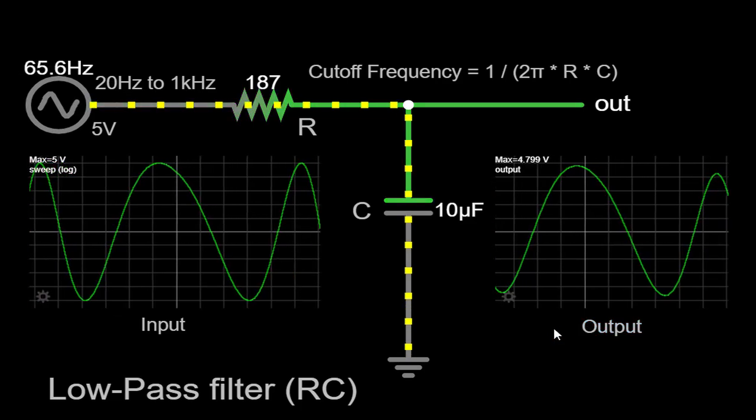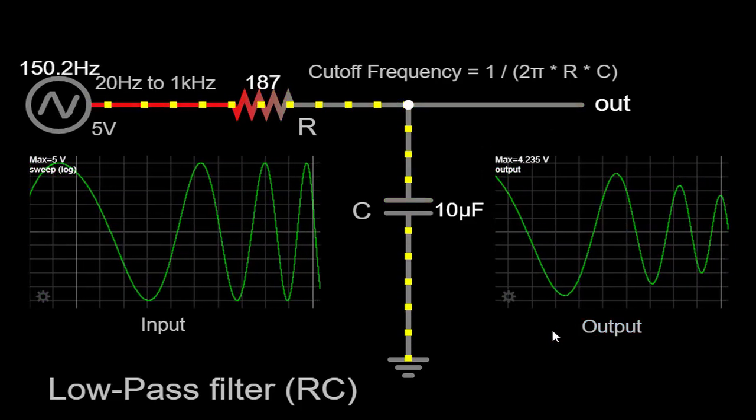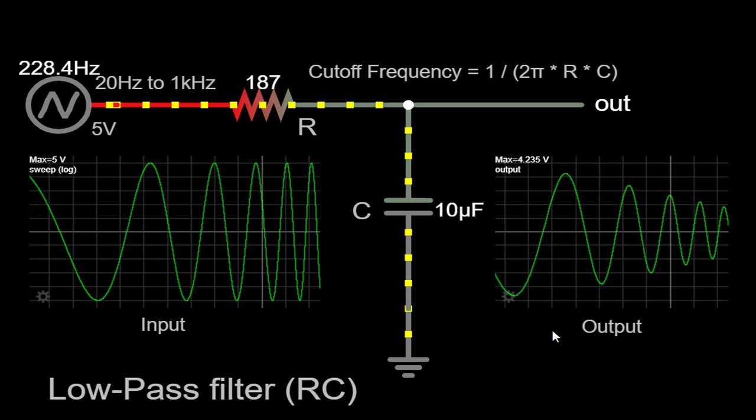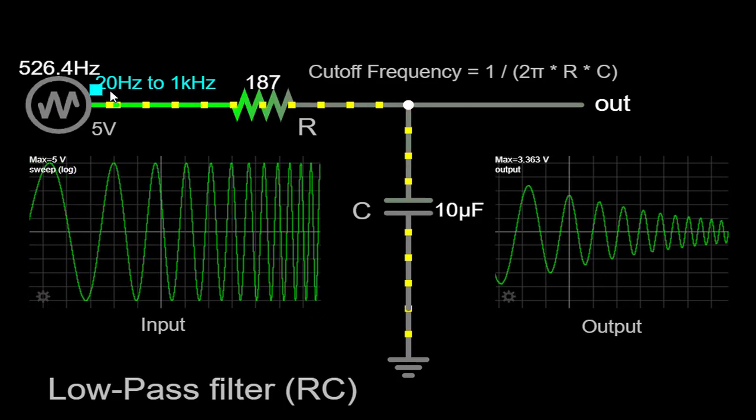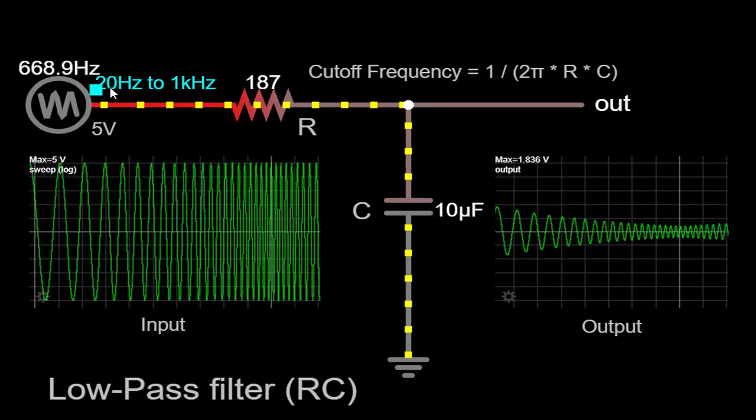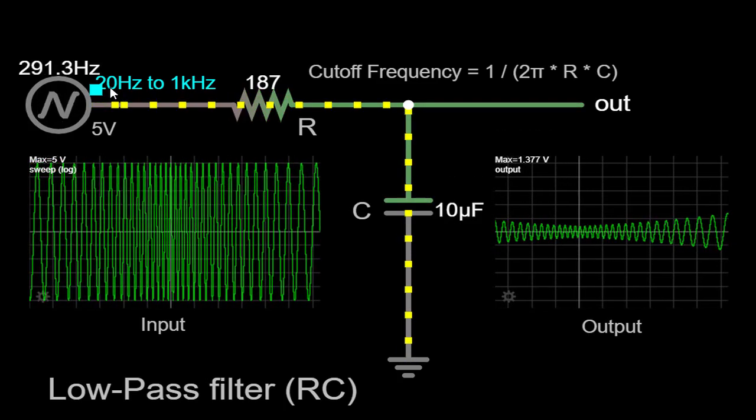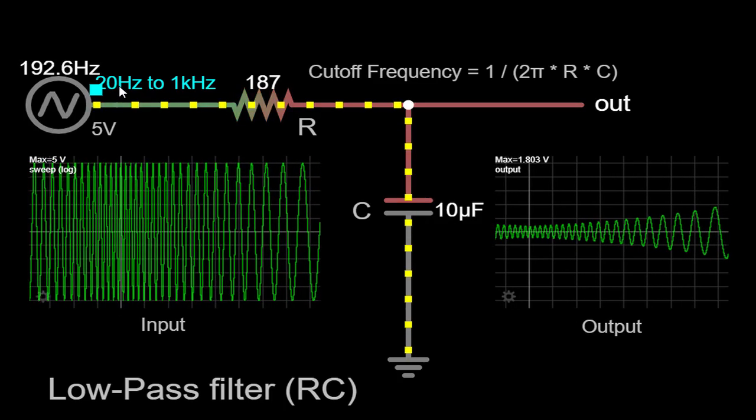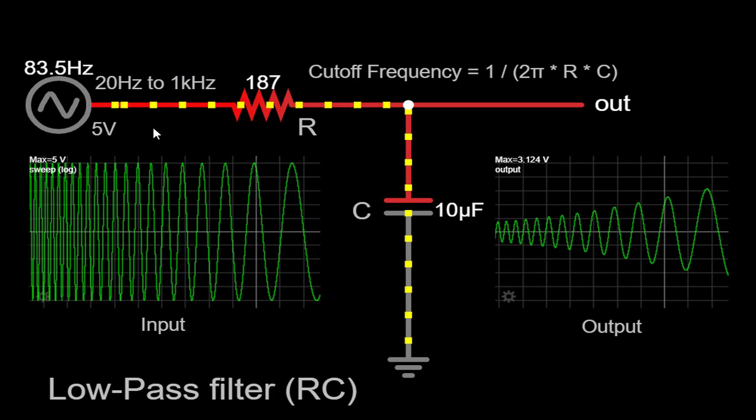As the frequency sweep progresses, you will notice a fascinating phenomenon occurring within the circuit. At the lower end of the frequency spectrum, particularly around the 20 hertz range, the low-frequency components of the input signal pass through the circuit virtually unaltered, retaining their original amplitude. This behavior is expected since the low-pass filter allows low-frequency signals to pass through without significant attenuation.